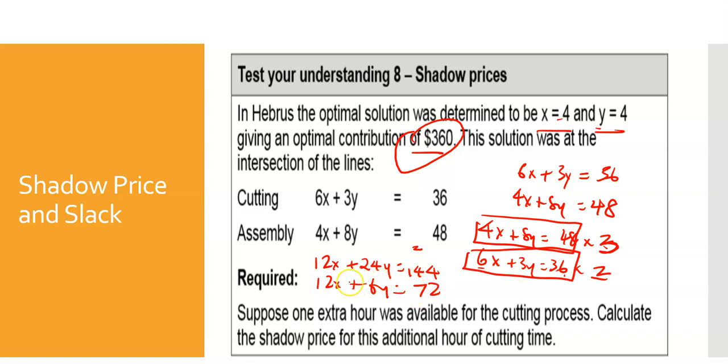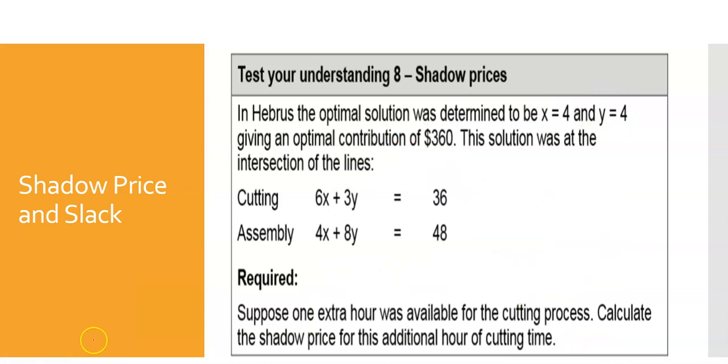12x minus 12x is 0, 24y minus 6y is 18, and that equals 144 minus 72 which comes to 72. So y of course is equal to 4. I can chuck this y into any of these equations. If I do 6x + 3 times 4 = 36, so 6x + 12 = 36, that means 6x = 36 minus 12 which is 24, and that means x equals 4. We can prove that again.